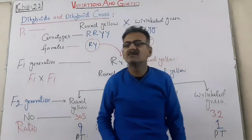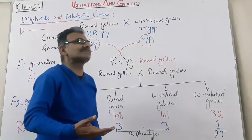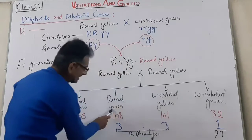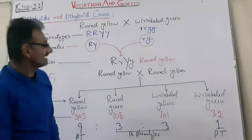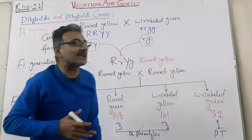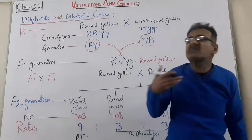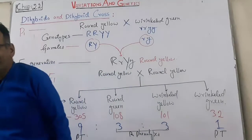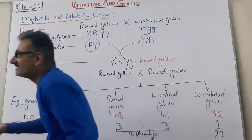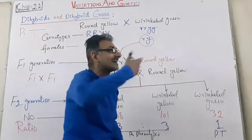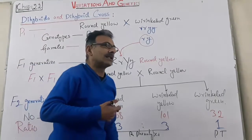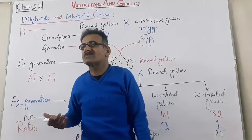In this case Mendel found that two new combinations also appeared — round green and wrinkled yellow. Round yellow and wrinkled green were the parental combinations. He concluded that during gamete formation alleles are segregated, and similarly there is shuffling and recombination of the traits. Now we will discuss Mendel's law of independent assortment.